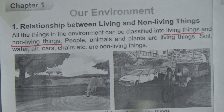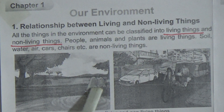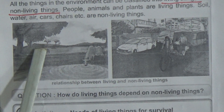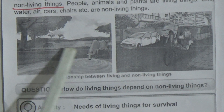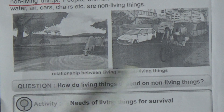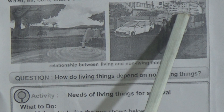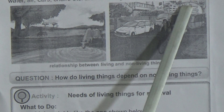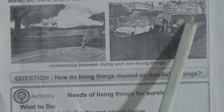Dear students, if you observe this picture, you can find out the relation between living and non-living things. Here there is an animal — it is a cow. The cow is eating grass. We know animals take care for their breeding, and we also get our food from plants. This is also a picture of the relation between living and non-living things. They are also showing vehicles and buildings where we live and which we use for going anywhere.